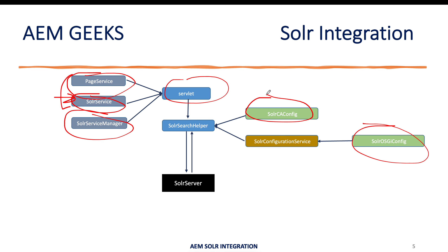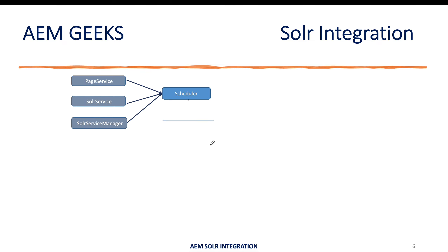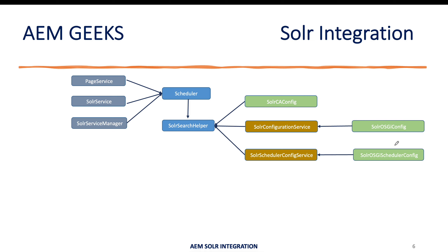One important thing: the context-aware configuration is picked based on path — we'll pass the path of that particular site. Context-aware configuration is always retrieved using a path, either at a particular path or a particular website; there is a detailed tutorial about it. For the scheduler, I get all three services, create the object of the SolarSearchHelper plain Java class, get the context-aware configuration, and also have one more OSGi configuration to schedule the job. Once I have all the information, I make the call to the Solr server.